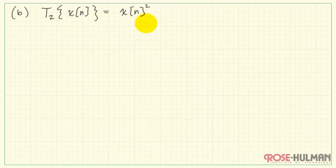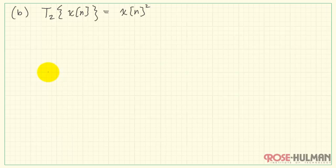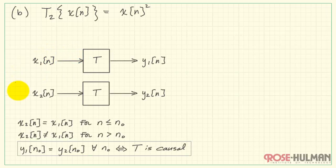Here's our second system, T2. This is x of n squared. Same structure as before, evaluating at n equals n0.